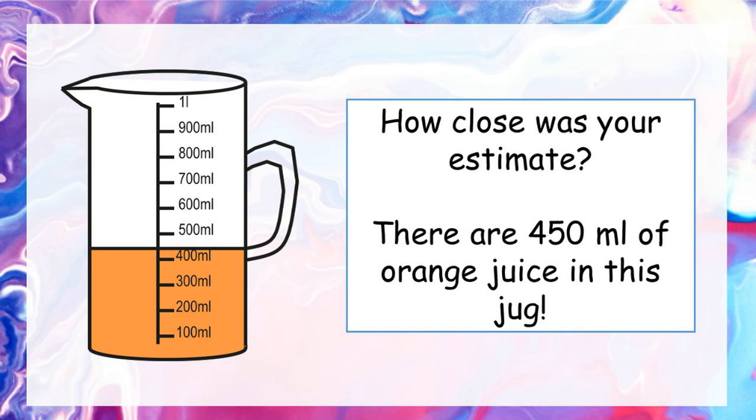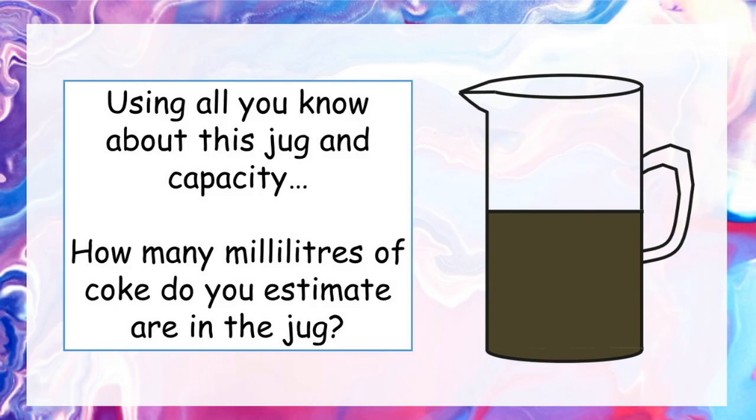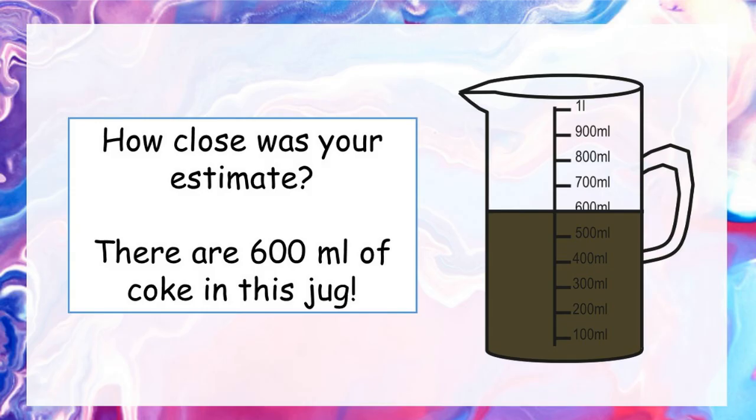And one last one — have a look at this jug of coke. Using all you know about this jug and about capacity, how many millilitres of coke do you estimate are in the jug? Pause the video and write down your answer. The final answer is 600 millilitres of coke. Using your understanding of this jug and of capacity, you can see there's just over half a litre in this jug, so anything near 500, 600, or 700 is a good estimate.